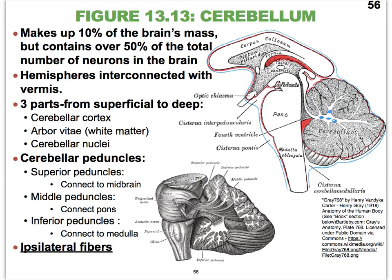The cerebellum is the second biggest part of the brain — of course the cerebrum is the biggest. It makes up about 10% of the brain mass, but it contains almost half of the neurons in the whole brain. So there's a reason we call it the cerebellum — it really is a mini cerebrum. Those two hemispheres are interconnected by a little worm-like structure called the vermis. Vermis literally means worm-like.